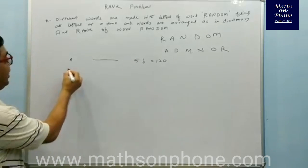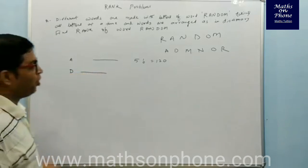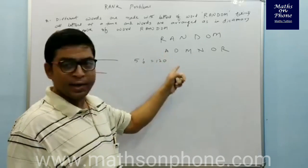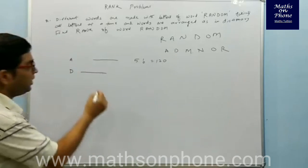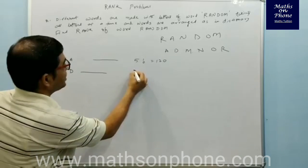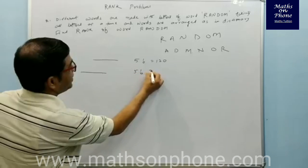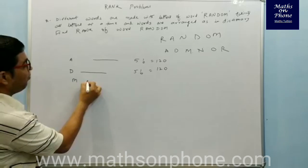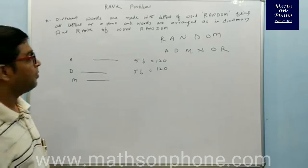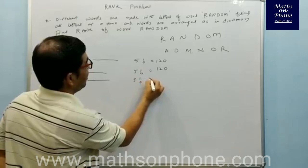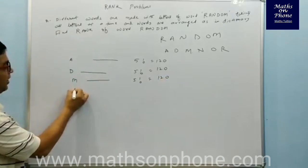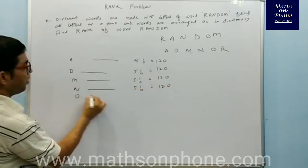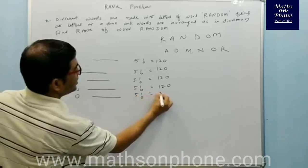Next, from the alphabetical order, pick D. With D fixed at first place, the remaining five letters can be arranged in 5! = 120 ways. Then pick M — words starting with M is again 5! = 120. Then N is 120, then O is 5! = 120.